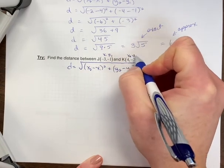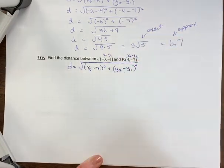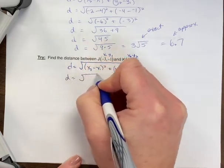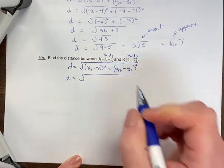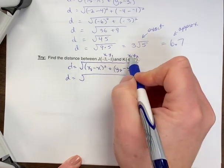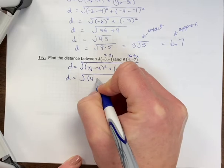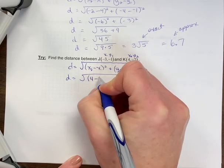Now I've already written the formula out for us, so we're going to substitute the numbers into the correct place. You want to make sure you put that long radical sign. So x₂ is four, so in my brackets I have four minus - that's part of the formula - x₁ is negative three, so I plug in negative three, close the brackets, squared.